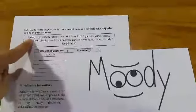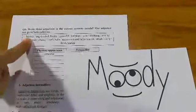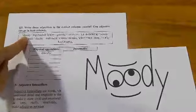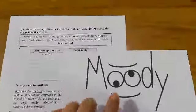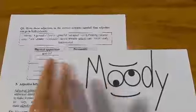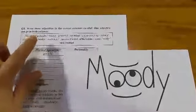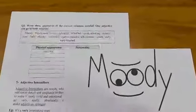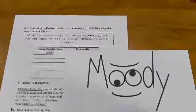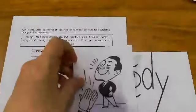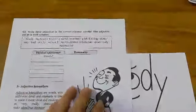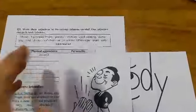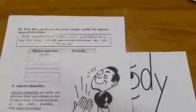For example, the first word: we have 'moody.' مودي هو وصف لشخصية الشخص — المزاجي، متقلب المزاج. The next word is 'big-headed.' Big-headed — مغرور، متكبر. Of course it's not physical appearance — طبعاً مو مظهر عام — إنما أيضاً personality.